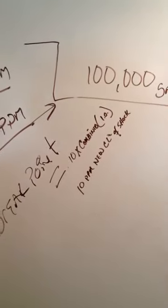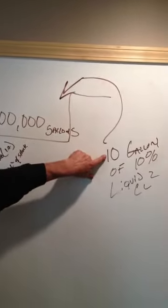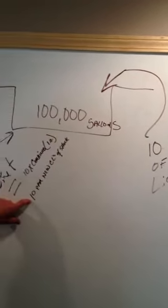For a 100,000-gallon pool using 10% liquid chlorine solution, you would put in 10 gallons of liquid chlorine—that's the equivalent of a 10 ppm shock.